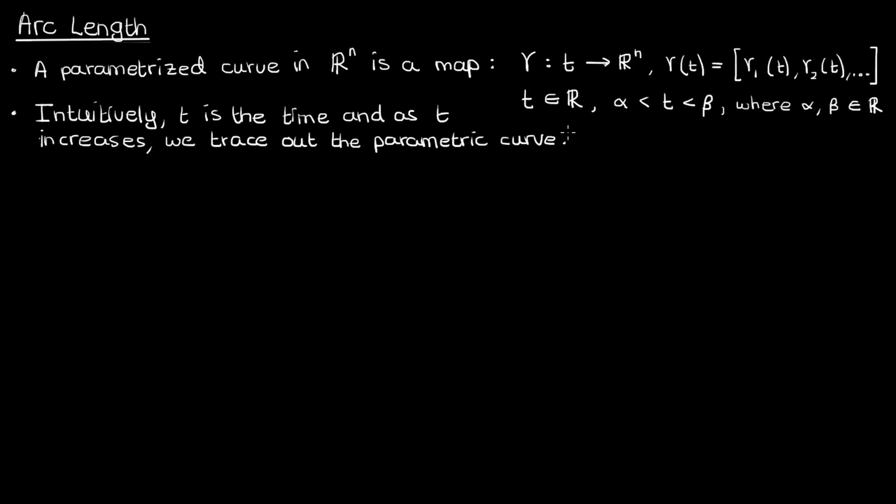Now suppose we have a parametrized curve γ and this is what it looks like. This is a finite curve with the left endpoint corresponding to a parameter value of α and the right endpoint corresponding to a parameter value of β. Suppose I wanted to find the length of this curve, also known as the arc length, from α to β. How would I do that?